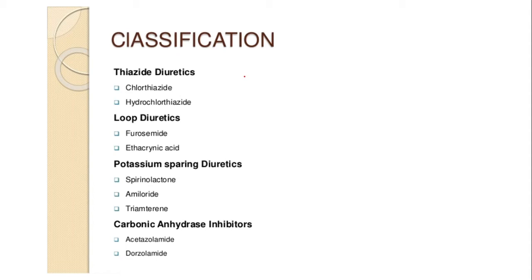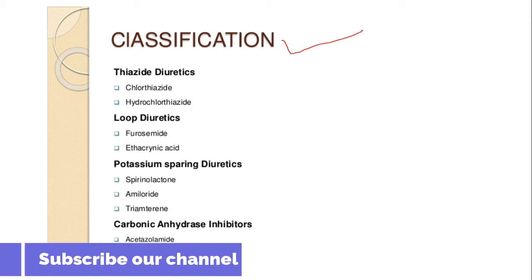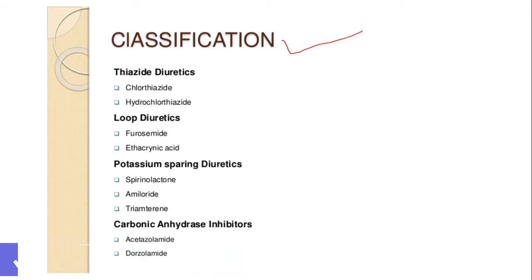If you look at the classification of different classes, there are thiazide diuretics number one, number two loop diuretics, number three potassium sparing diuretics, and number four carbonic anhydrase inhibitors. These are different classes of drugs.